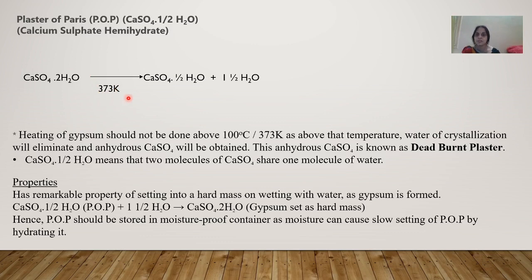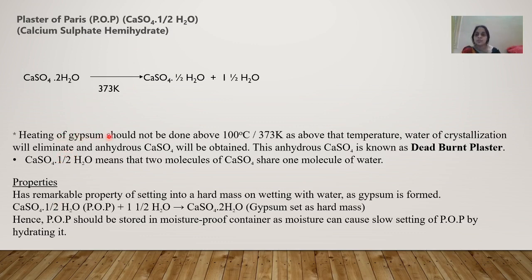When gypsum is heated at 373 Kelvin, you get CaSO4·½H2O — this is POP. One and a half molecules of water (three-fourths of the molecule) are eliminated. This is the preparation of POP: gypsum heated to this specific temperature gives POP, where three-fourths of the water molecules are evolved and lost.